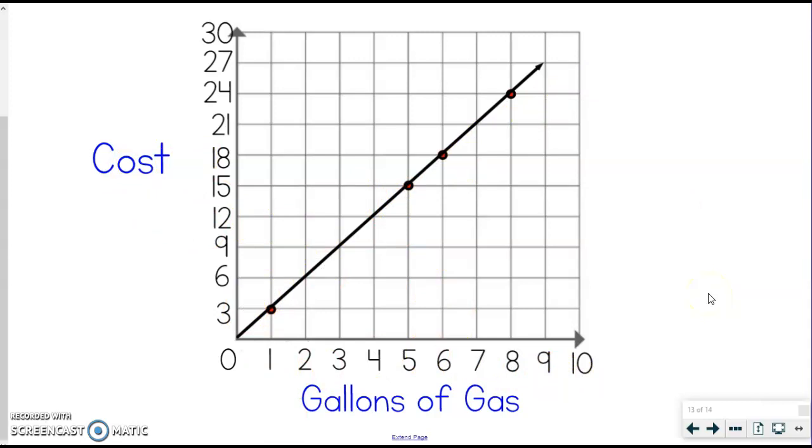So that's why we can draw that line because we could have part of a gallon or part of a dollar and it's going to all fit on this line. If we were talking about something that could not be broken down into parts like that, then we would not draw a line. I'm not being too picky about that. I just wanted you to be aware.